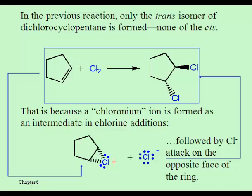We don't have to worry about Markovnikov or anti-Markovnikov when adding Cl2 or Br2 across a double bond, but there is something special to look out for if you're using an alkene that is a ring compound, like this cyclopentene here. If you add two chlorines or two bromines across this double bond, you specifically get the trans isomer. Remember from our discussions in chapter three, when you have ring compounds such as dichlorocyclopentene, there is a cis and a trans isomer.